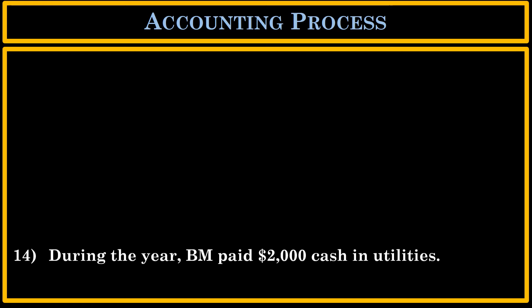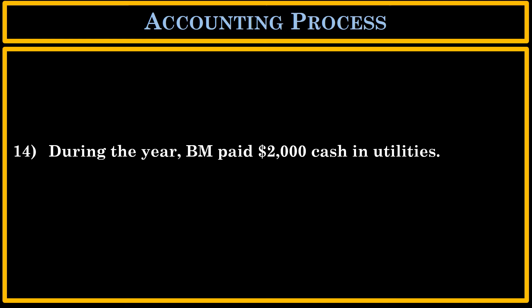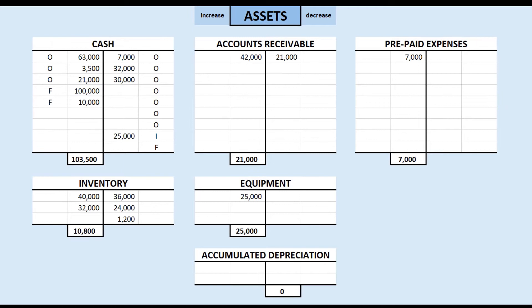Our next transaction: during the year, BM paid $2,000 cash in utilities. We need to reduce our cash T-account. Is this operating cash flow, investing cash flow, or financing cash flow? We're buying a service — utilities — and we are using it up during the year to make or sell our widgets. So this is part of our operations. This is going to be an operating cash flow of $2,000.